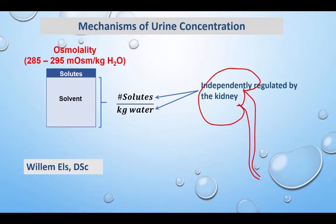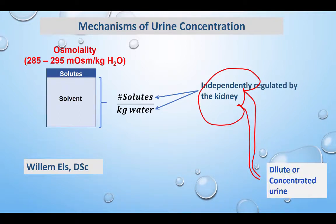Their access to water varies widely. To compensate for conditions of either water deficit or water loading, the kidney has the ability to produce either a diluted or a concentrated urine.